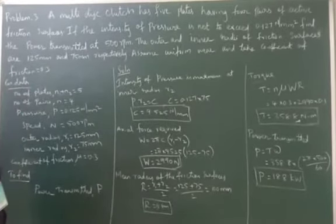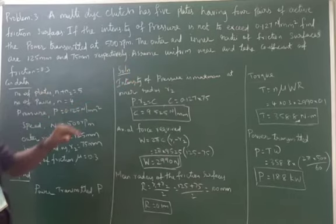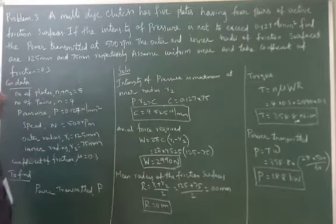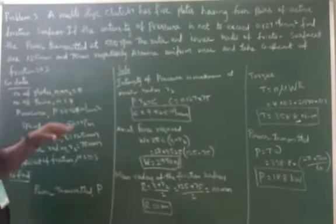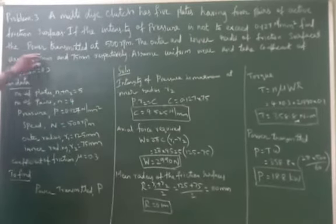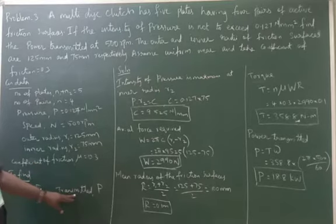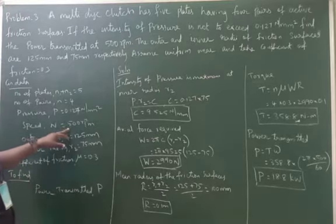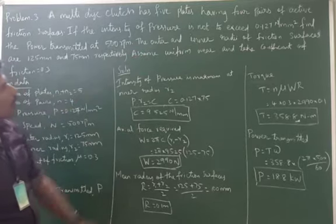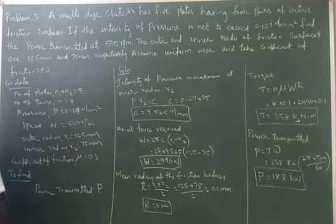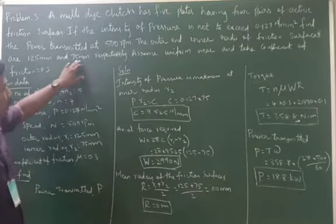They given the intensity of pressure, which is not to exceed 0.127 N/mm². Then they asked to find the value of power transmitted at 500 rpm speed. They also given the value of outer and inner radius: outer radius R1 is 125 mm and inner radius R2 is 75 mm.